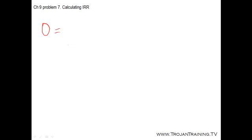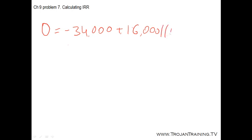Zero equals your NPV, the net present value. It equals your initial investment of $34,000 — and remember we always put the initial investment with a minus because it's a cash outflow, the amount of money the company spends on a project — so minus $34,000 plus the cash flow for year one, $16,000, divided by one plus the internal rate of return.